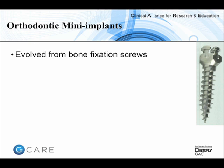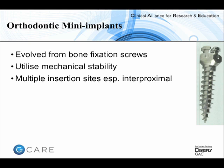Having evolved from bone fixation screws and relying on mechanical stability, one of the beauties of mini-implants is that their small size means they can be placed in almost any location in the mouth, particularly in interproximal sites. They are simple to remove and simple to insert, which is good from both the orthodontist's and the patient's perspective, so both insertion and removal should be as straightforward as possible.